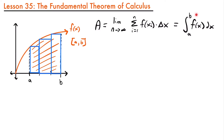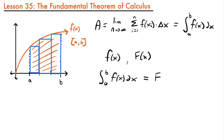This connection between a definite integral and the area of a region underneath a curve is made possible by the fundamental theorem of calculus. The first part of the fundamental theorem of calculus says that for a function f of x and its antiderivative capital F of x, the integral from a to b of f of x dx is equal to the antiderivative evaluated at b minus the antiderivative evaluated at a. So we'd have capital F of b minus capital F of a.